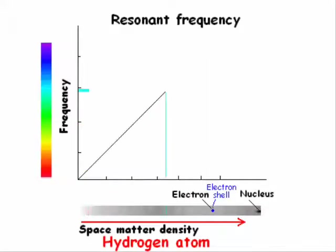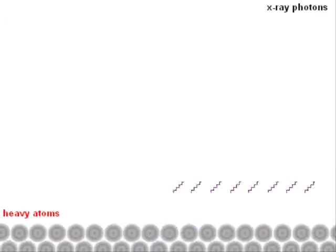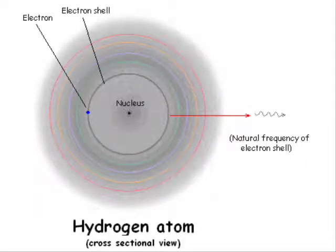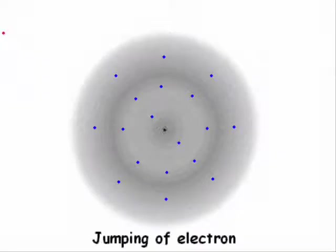As the density of space matter increases, the resonant frequency of that region also increases. The shortest wavelength radiation that an atom can emit depends on its atomic mass. For example, heavy atoms like tungsten emit hard X-rays when their innermost electrons are excited, but the shortest wavelength radiation that can be emitted by the lightest element hydrogen is in the shortest wavelength of the Lyman series. When an electron is excited in an atom, for every oscillation towards the nucleus, the high density space matter in the inner region repels the electron to an outer low density space matter region. This is the reason for the jumping of an electron with the emission of a photon.